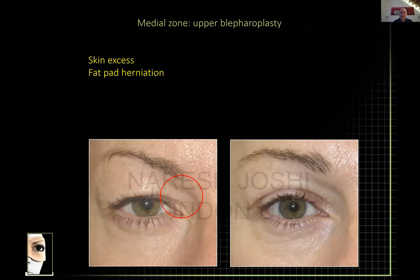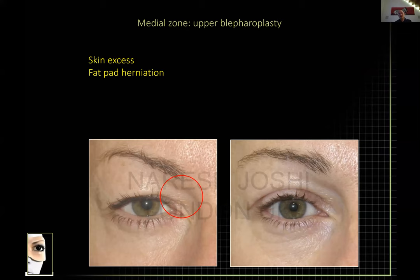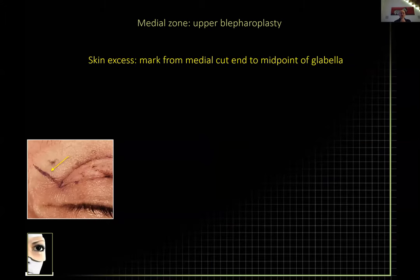Moving on to the medial zone — it's about skin excess and volume manipulation. If you have skin excess, usually in more elderly patients, you need to assess whether to remove it. Not all skin in the medial third should be removed, because this is the area where taking too much skin results in lagophthalmos. Lateral third skin excess will almost always be compensated by further brow droop, so it's very rare to get lagophthalmos from too much skin removal in the lateral third.